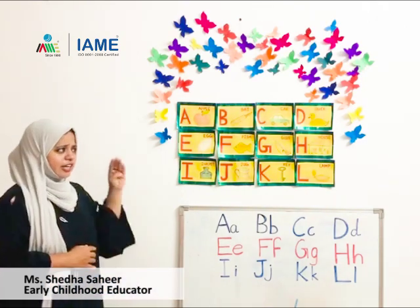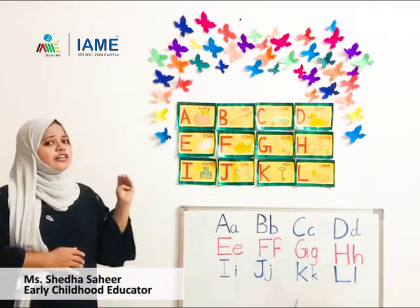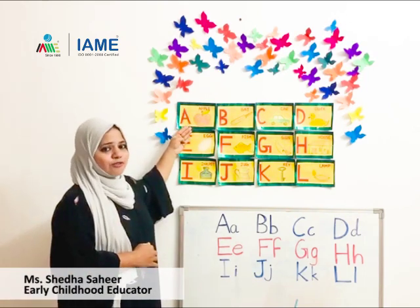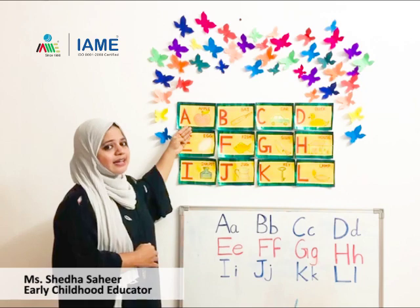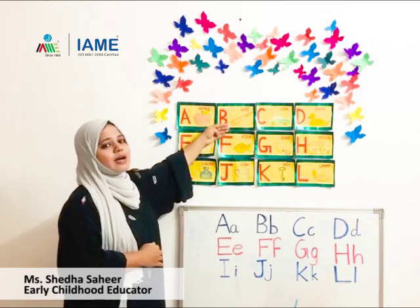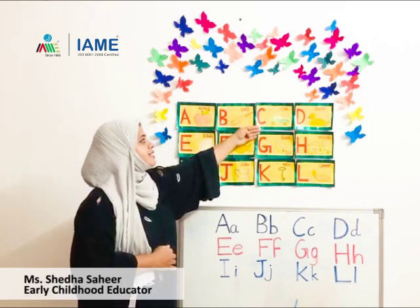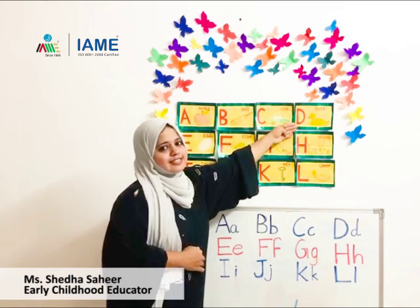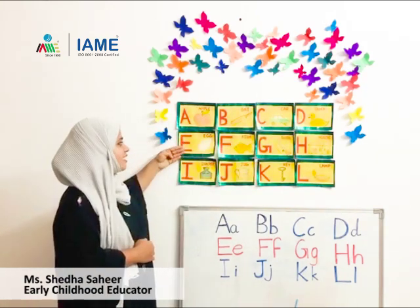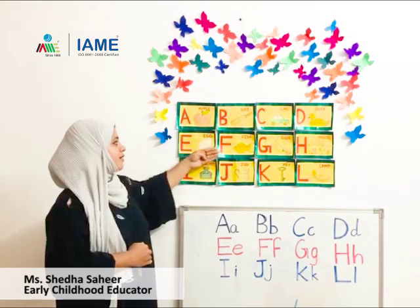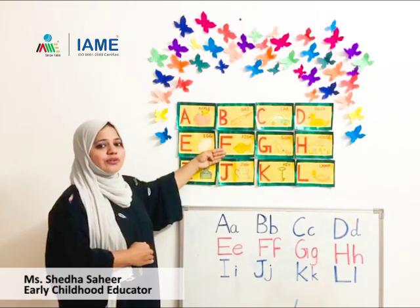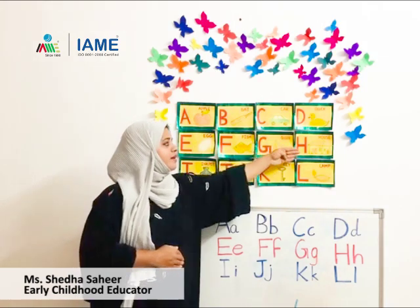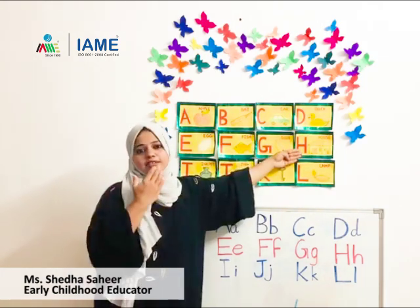Can you just recall the letters that you learned last class? A — the sound for letter A is M. B, B. C, K. D, D. E, F. F, F. G, G. H, H.